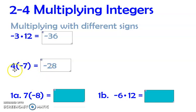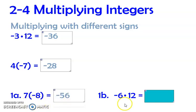That's going to be negative 28 — 4 times 7 is 28 and you've got one negative, so it's negative. Different signs gives you a negative. Now I want you to attempt these two real quick: pause and check your work. So 7 times negative 8 is negative 56. Negative 6 times 12 is also going to be negative — negative 72.